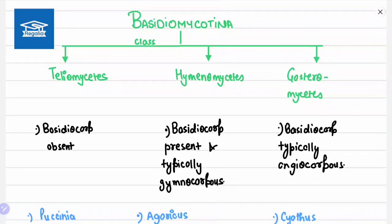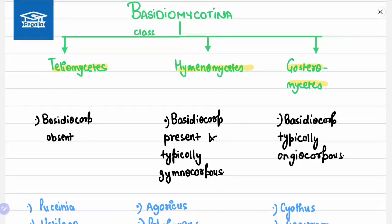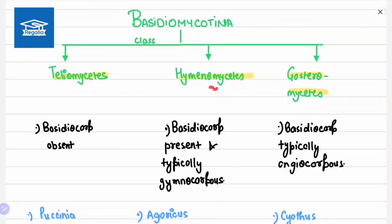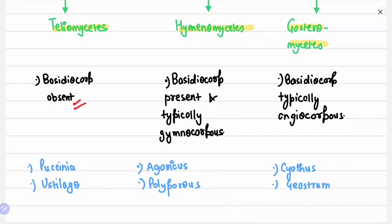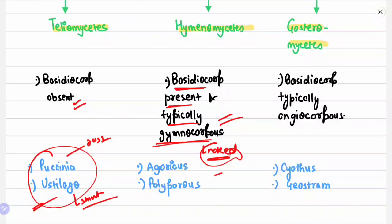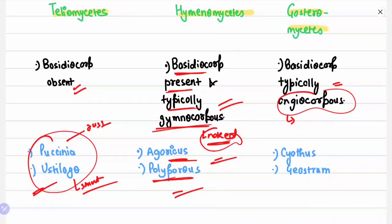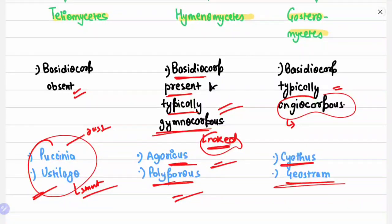The last subdivision is Basidiomycotina, which has three classes: Teliomycetes, Hymenomycetes, and Gasteromycetes. Teliomycetes have no basidiocarp — examples: Puccinia (rust) and Ustilago (smut). Hymenomycetes have a basidiocarp that is typically gymnocarpous, meaning naked fruiting body — examples: Agaricus and Polyporus. Gasteromycetes have a basidiocarp that is typically angiocarpous, meaning covered — examples: Cyathus and Geastrum.